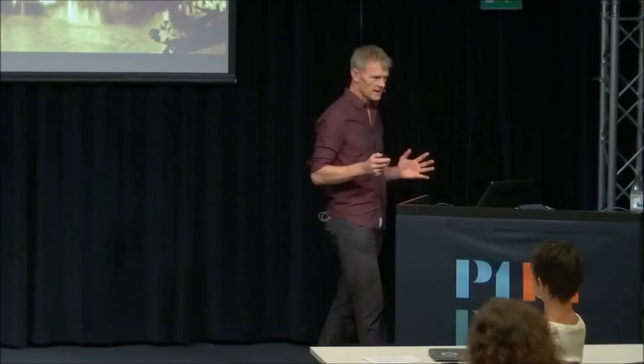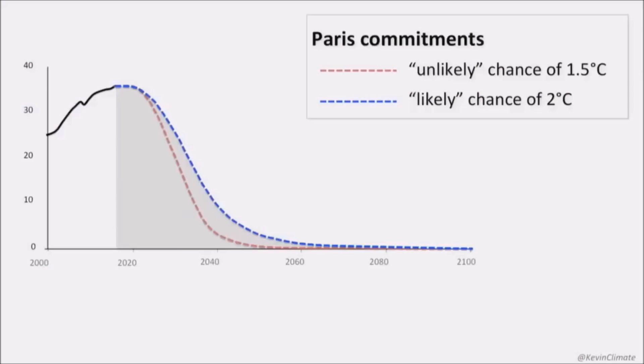Let's try and frame the mitigation challenge. We've got this 1.5 and 2 degrees C of warming, which relates to sets of impacts. If you plot them out at a global level, there's not a lot of variation in this, because there's so little carbon budget left. Because we've deliberately chosen to waste the carbon budget over the last 27 years, there's almost nothing left.